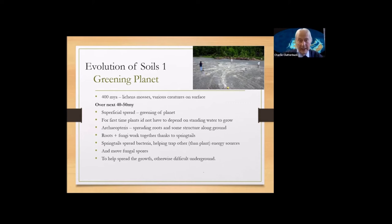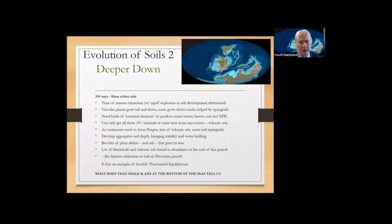Spreading roots, and the fungi started working together to extend that spread. And the springtails were around to eat the bacteria and spread the fungal stuff. And that helped move the fungi around underground. Because otherwise, how do spores move underground? You can't rely on the wind and there wasn't much water around. So these creatures are important for moving the spores around.